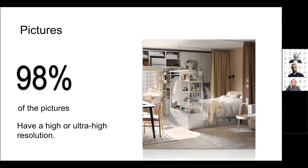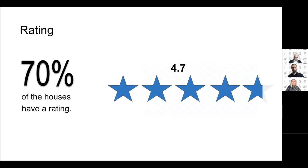In the pictures dataset, we focused on quality, since good pictures in the listing are more likely to lead to clicks and increased booking inquiries. The analysis showed all properties have photos, and 98% are of high or ultra-high quality — likely because everyone now has a good camera, even on smartphones. We therefore did not include pictures as a feature in our models. The ratings exploration showed 70% of houses have a rating, with an average of 4.7 stars. Due to unknown bias — either properties are genuinely good or only satisfied guests leave ratings — we also excluded ratings as a model feature.